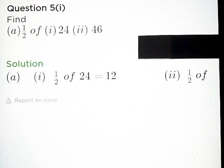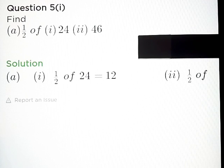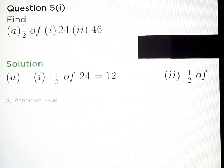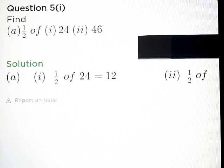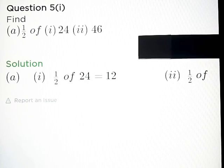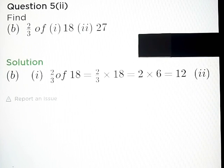Question number 5, Part A: Find 1 upon 2 of 24 and 1 upon 2 of 46. Answer Part A: 12, and Part B: 23. Part B: 2 by 3 of 18 is equal to 12.